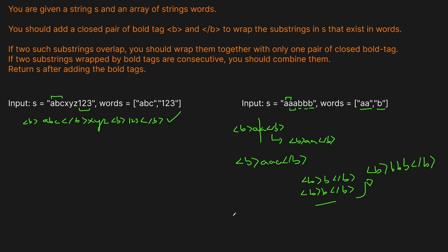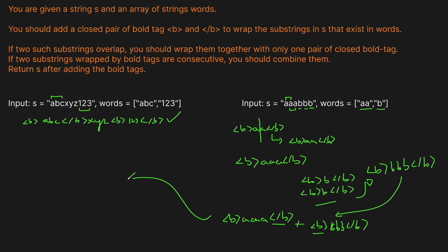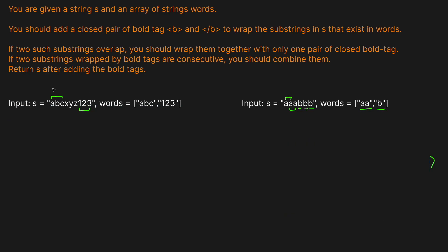Now we just have to deal with the 'BBB' part. We'll essentially have three bold tags in a row for each of the B's, and similar to what we had before, we combine them into one because consecutive bold tags should just be merged. So the final solution is one big bold tag: open bold, 'A', 'A', 'A', 'B', 'B', 'B', close bold. That's something we have to watch out for, but otherwise not too bad.